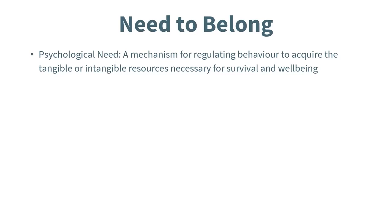Let's begin by discussing attraction and why we may be attracted to others and why we as humans intrinsically gravitate toward forming social relationships. Psychologists believe one of the reasons we're attracted to and form relationships with others is due to our fundamental need to belong — whether with family members, romantic partners, or friends. We need these bonds to maintain a satisfied life. In the textbook, this is described as a mechanism for regulating behavior to acquire tangible or intangible resources necessary for survival and well-being.